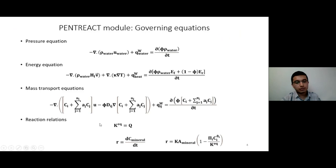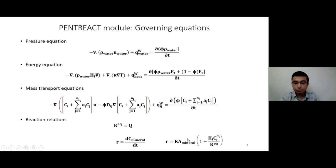To model equilibrium reactions, I used the mass action law — the equilibrium constant and the reaction quotient. For modeling kinetic rate constants, I used a specific relation. The reaction rate is calculated using the kinetic rate constant, the reactive surface area of the mineral, the reaction quotient, and the equilibrium constant.